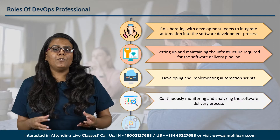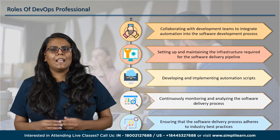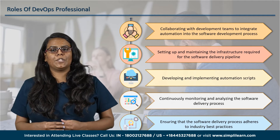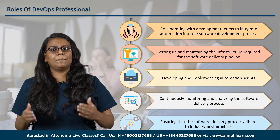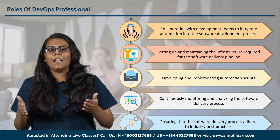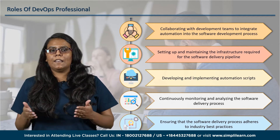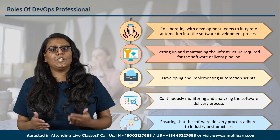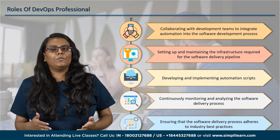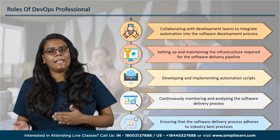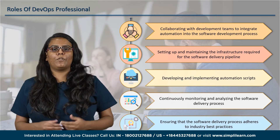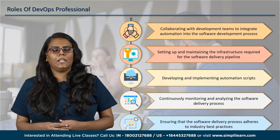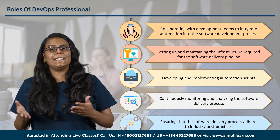Before diving into the specifics of how to become a DevOps professional, it's essential to understand the roles and responsibilities. A DevOps professional is typically responsible for designing, implementing, and maintaining the infrastructure, automation tools, and processes required for the efficient delivery of software. This includes collaborating with development teams to integrate automation into the software development process, and setting up and maintaining the infrastructure required for the software delivery pipeline, such as servers, databases, and network systems.